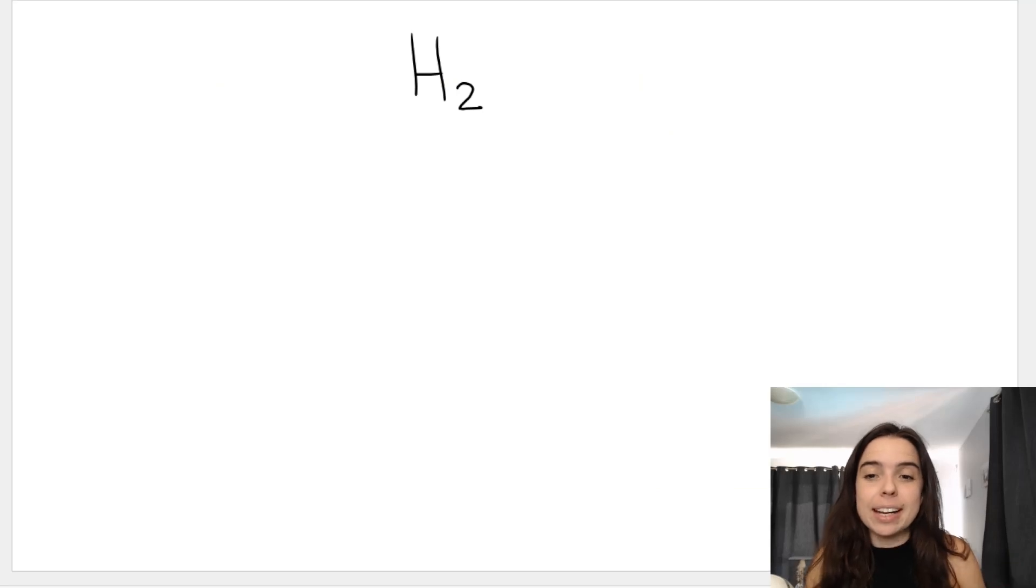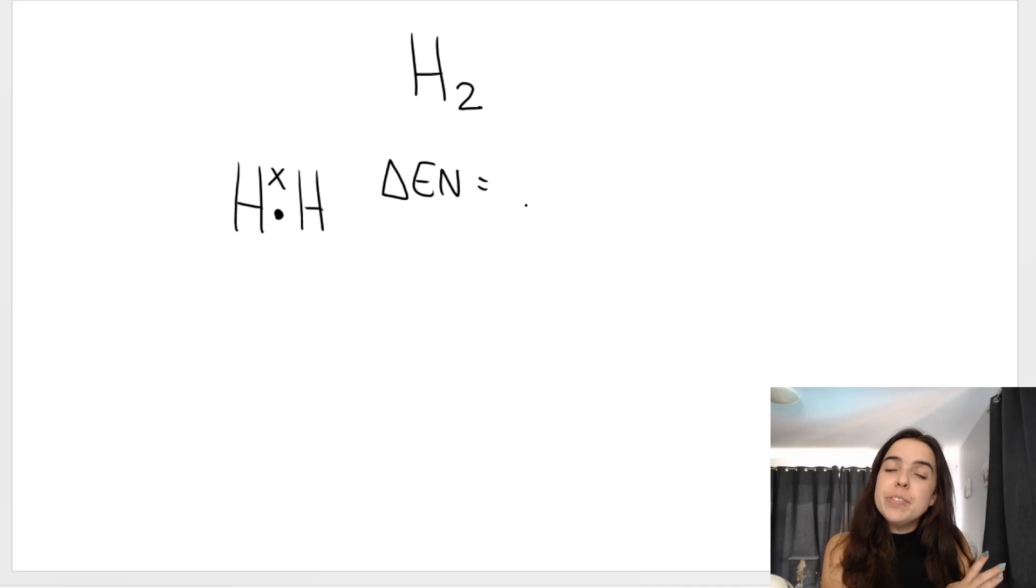Now how does this work? Let's do some examples. If we look at something basic like hydrogen H2, we know that if we draw the Lewis dot diagram, hydrogen has one valence electron, this hydrogen here has one valence electron.